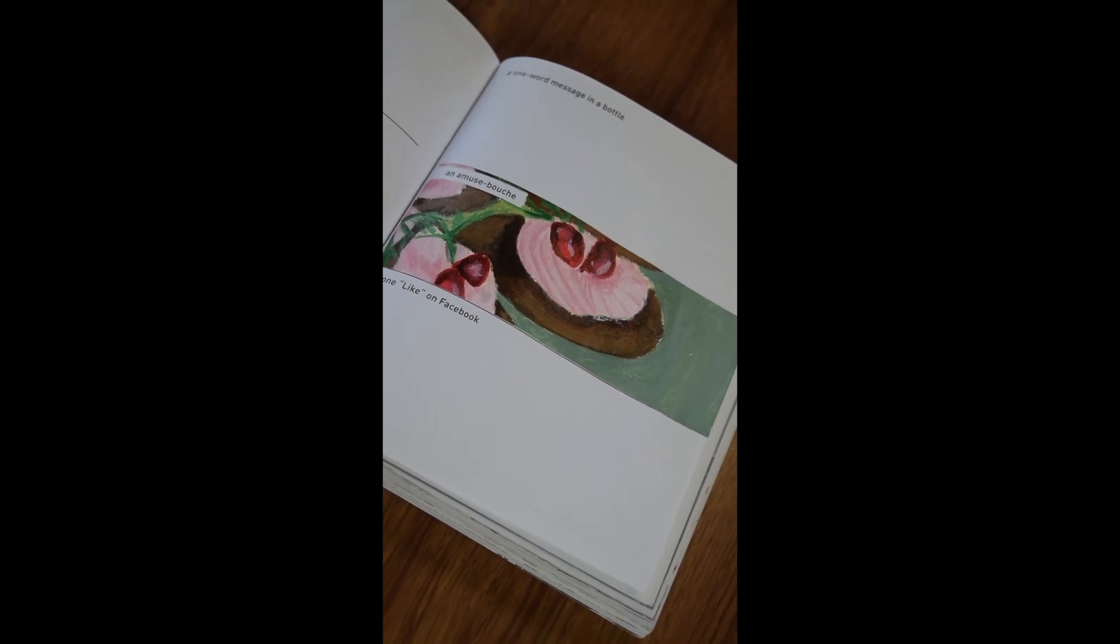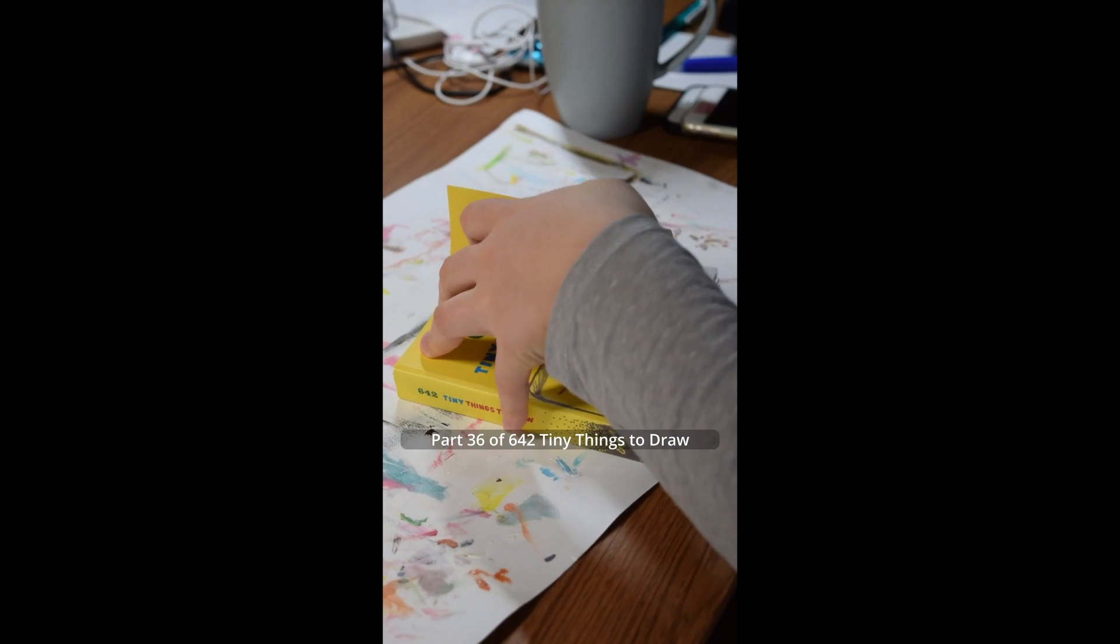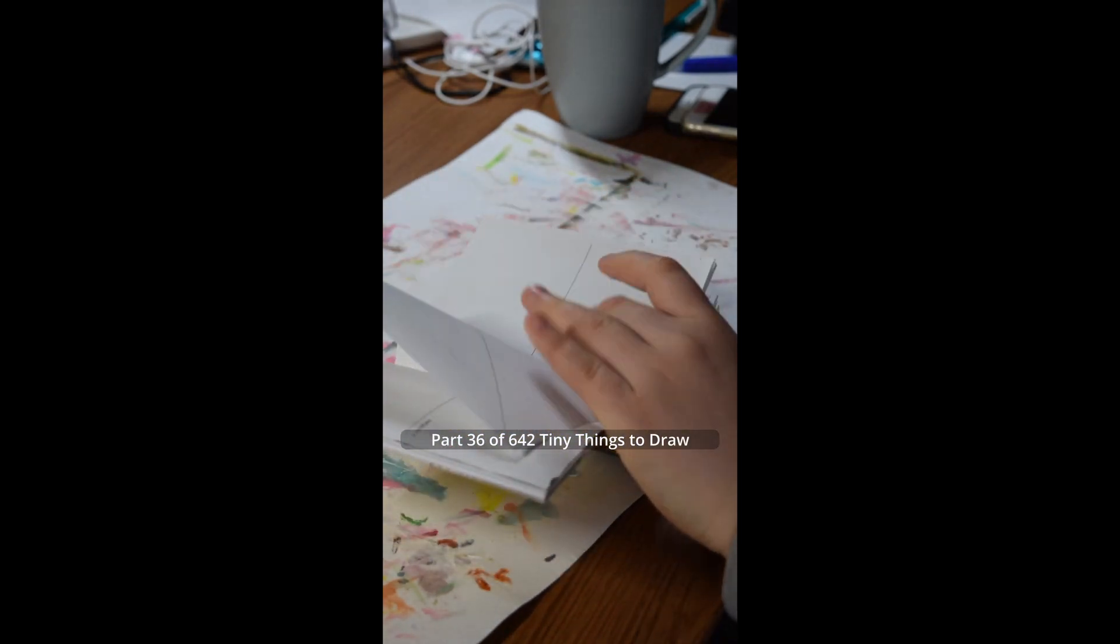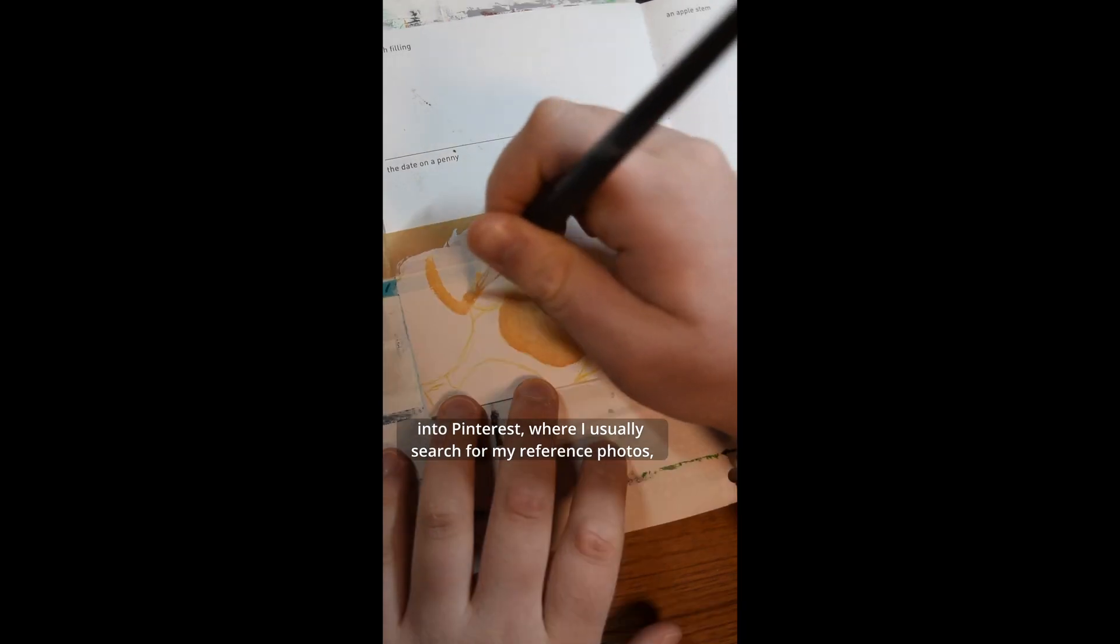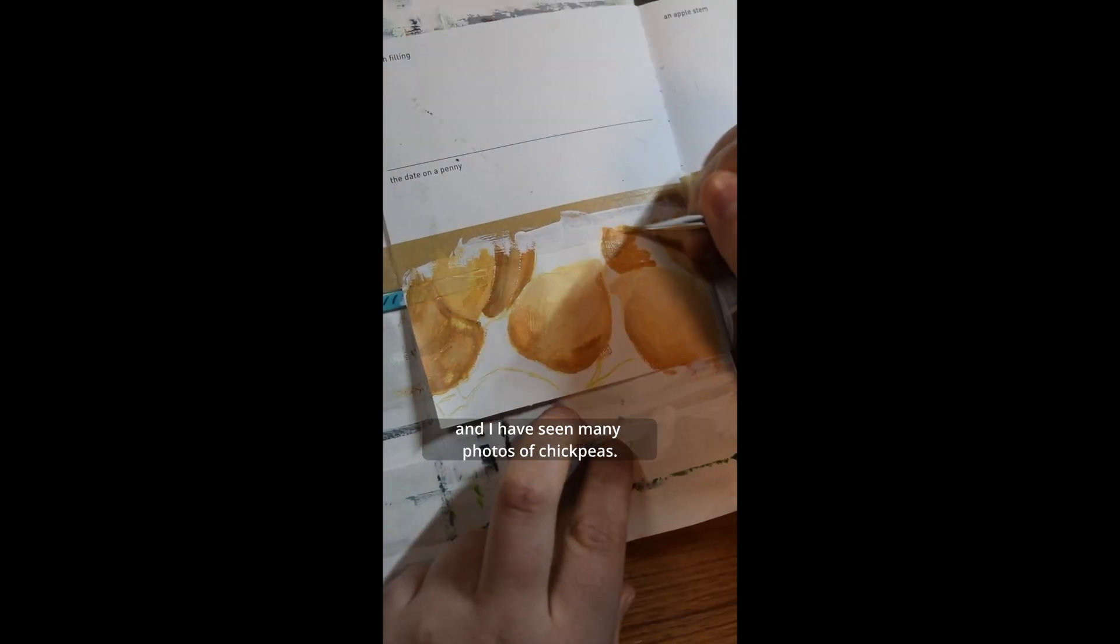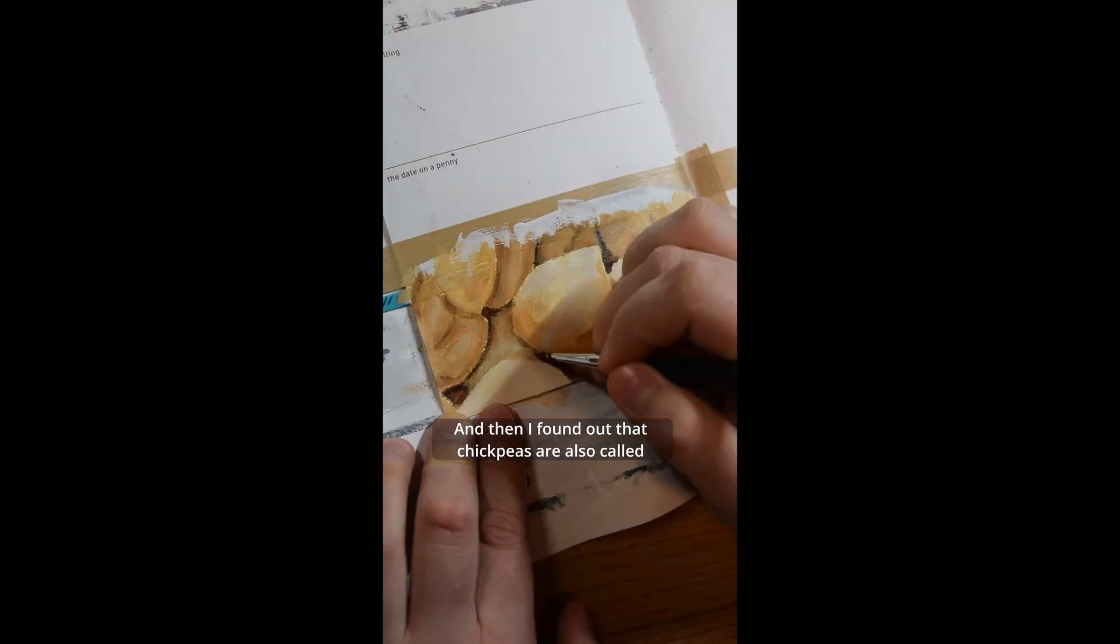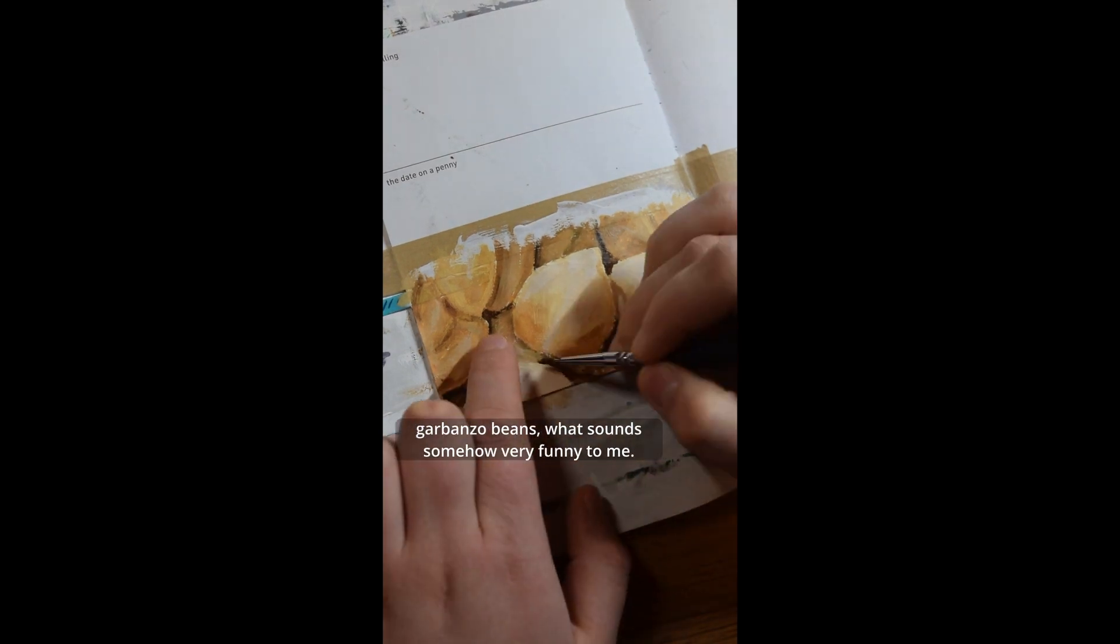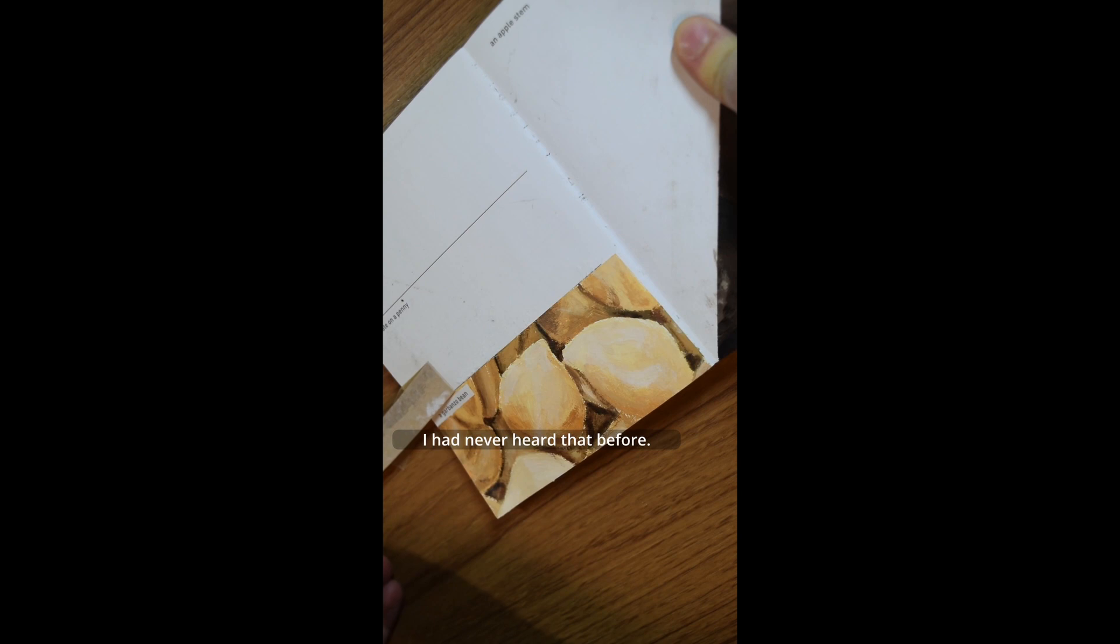Part 36 of 642 tiny things to draw. Today I will paint a garbanzo bean. I was very surprised when I typed garbanzo bean into Pinterest, where I usually search for my reference photos. And I have seen many photos of chickpeas. And then I found out that chickpeas are also called garbanzo beans, what sounds somehow very funny to me. I've never heard that before.